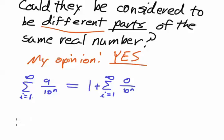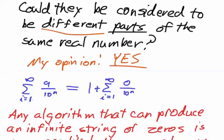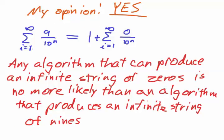Ultimately, I find I have what some people regard as a weak argument for this, which is that basically any algorithm that can produce an infinite string of 0s is no more likely than an algorithm that can produce an infinite string of 9s.